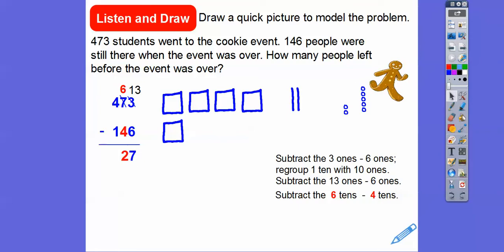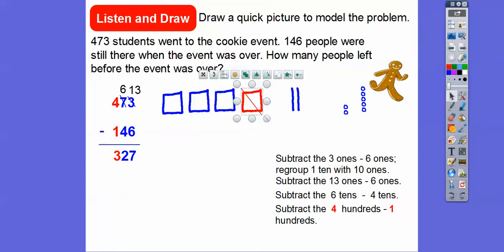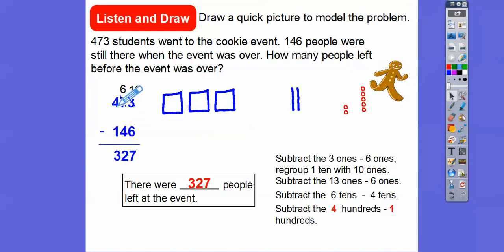And then we're left with subtracting the hundreds. So now we can go 4 minus 1 — 400 minus 100. We'll just take off the hundreds right there. And when we do that, we're left with 300. So our answer right there is 327. So 473 minus 146 is 327. There are 327 people who left the event.